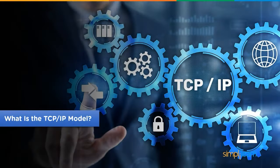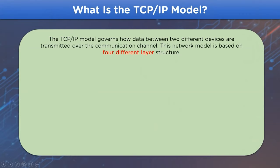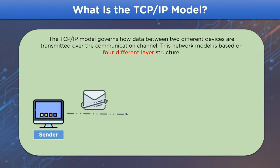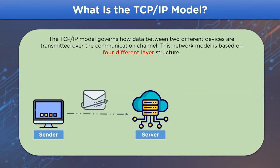The TCP/IP model is a method of sharing data and information over the communication channel, where the data has to go through each of the four layer structure of the network model. It also performs tasks such as remodeling of data, efficient transmission, and handling error-related issues. Each layer has dedicated protocols that they enact on the transmission data.